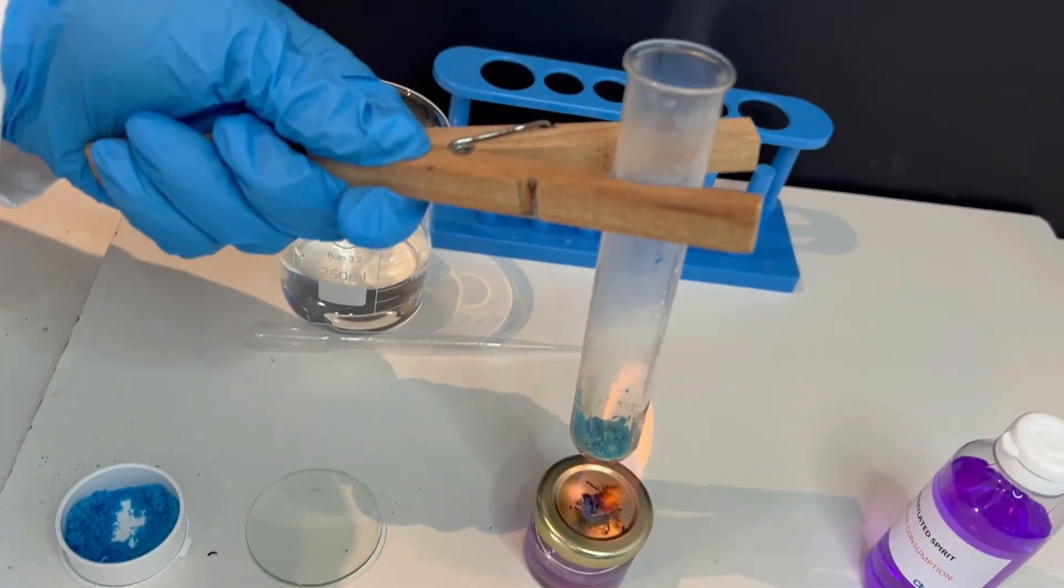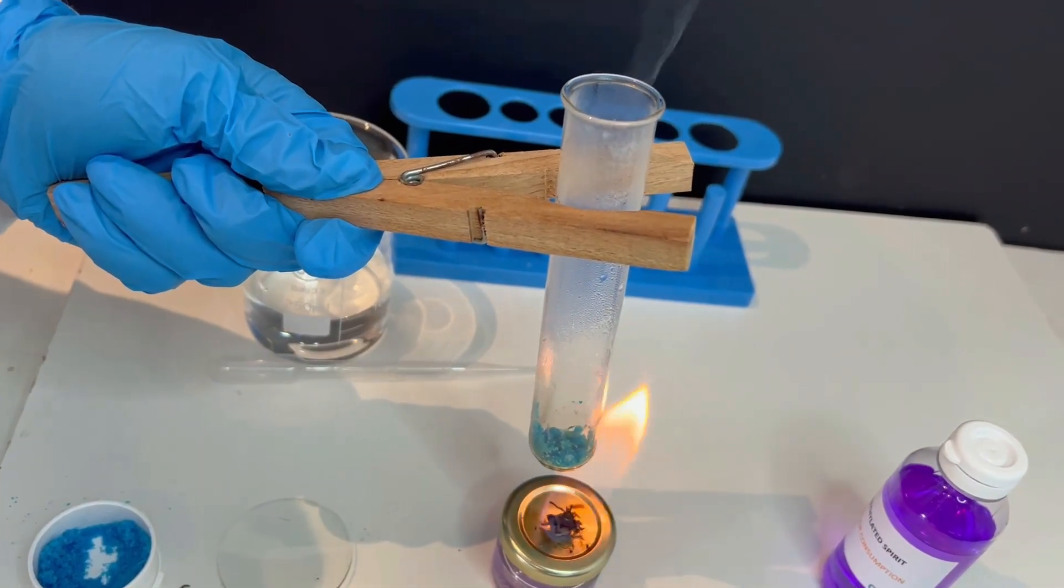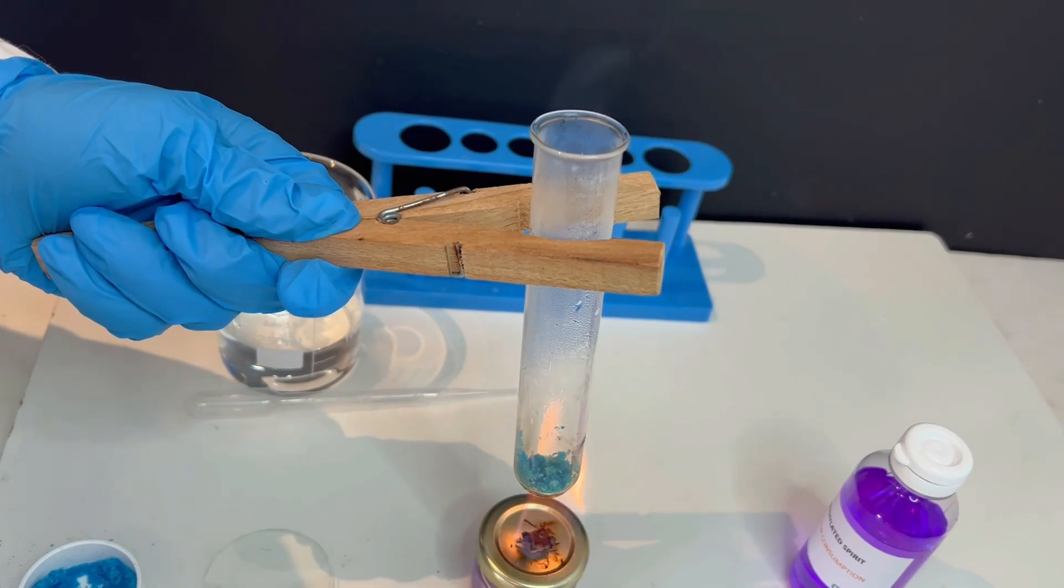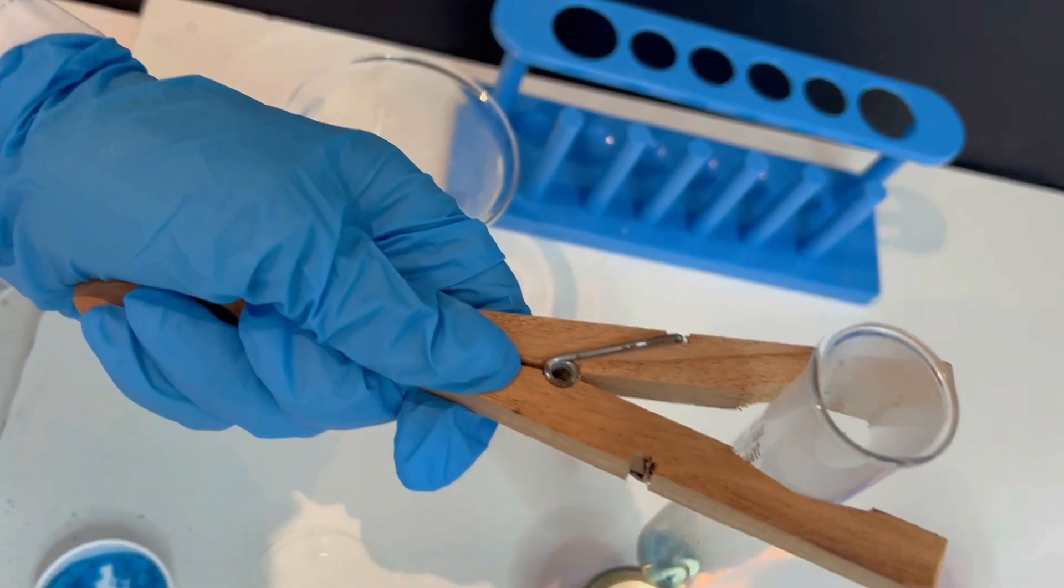As the copper sulphate is heated, you will notice water droplets forming on the inside of the test tube. This is the water of crystallisation being driven off as steam.